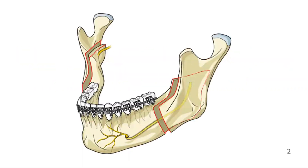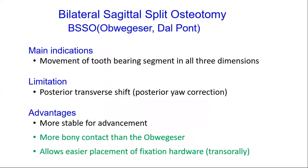The Obwegeser Dal Pont osteotomy is a bilateral sagittal split osteotomy of the mandible, ramus and angle, which can be extended into the posterior body. It divides the mandible into two smaller condyle-bearing segments and a large segment consisting of the mandibular body including the teeth and chin. This procedure is a modification of the classic Obwegeser osteotomy, but is intended to create larger contact areas between the segments.